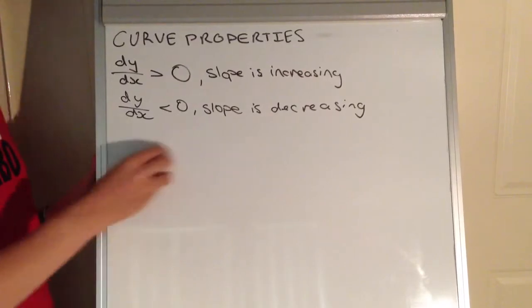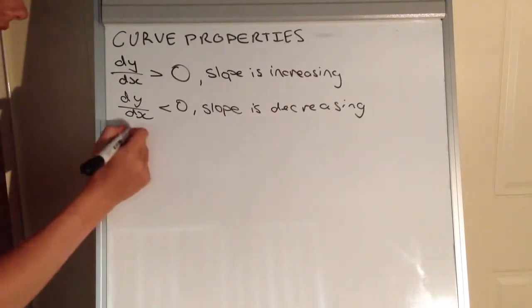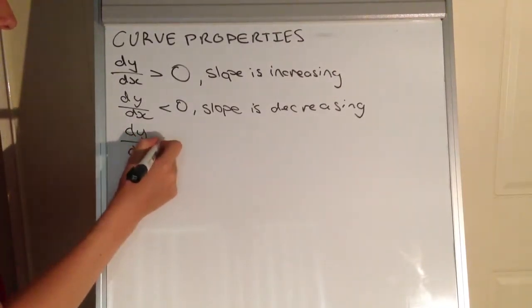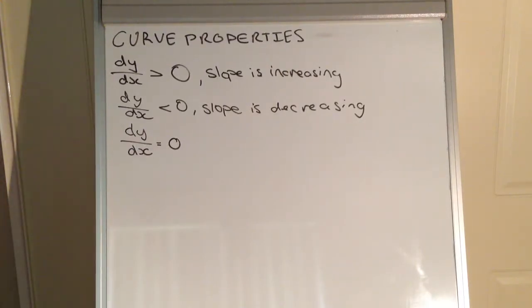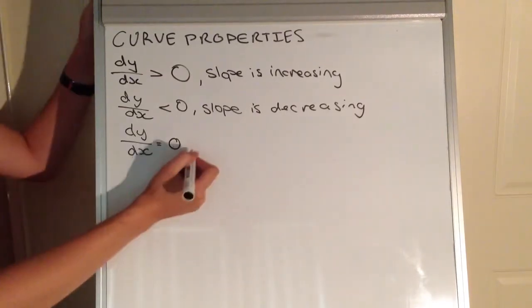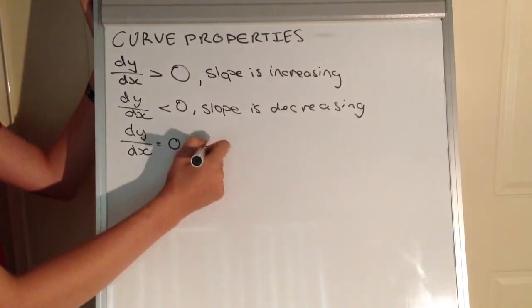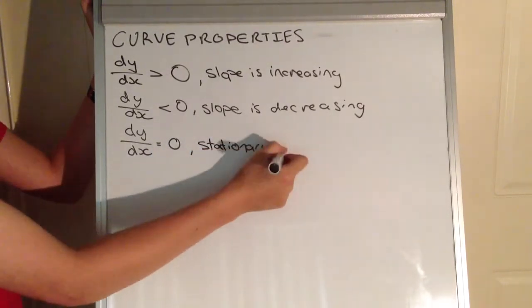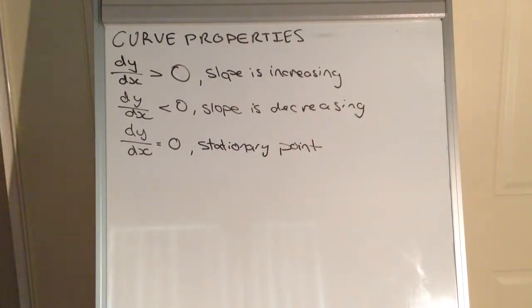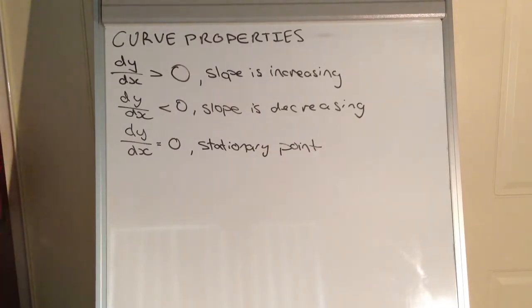Now there's one last rule that we need to go through, and this is quite an interesting one. Let's think about what happens when the dy/dx is equal to zero. The slope of the tangent line — the gradient at that point — is going to be a flat line, zero, because it is a flat line. So what happens when dy/dx is zero is that we have what's called a stationary point. The stationary point could be a minima, it could be a maxima, or it could be a horizontal inflection. Those are just a few rules about the derivative in context to a curve.